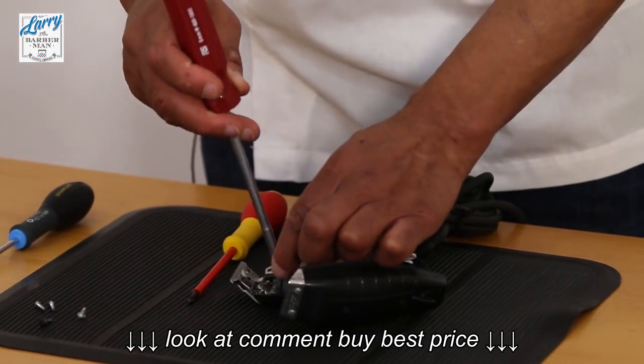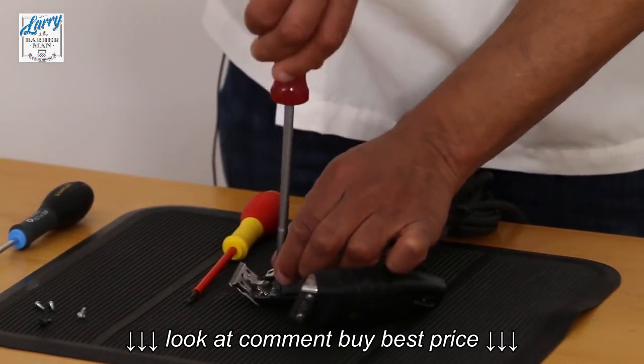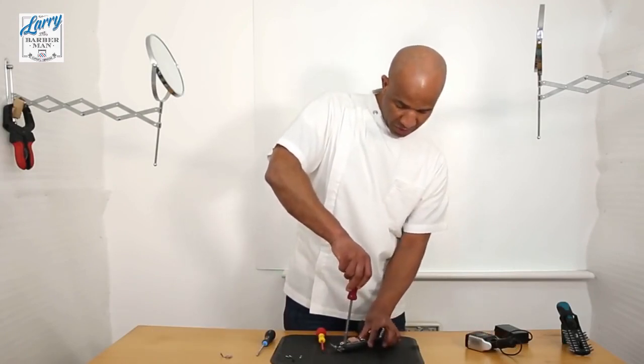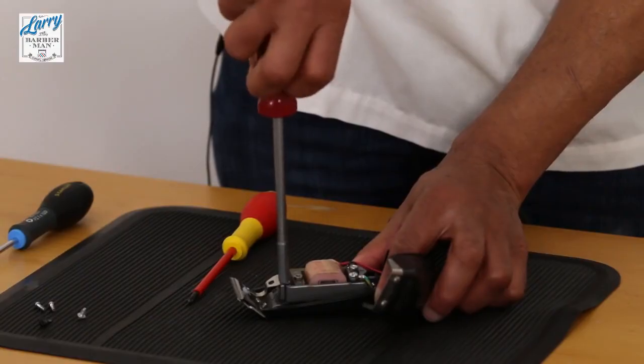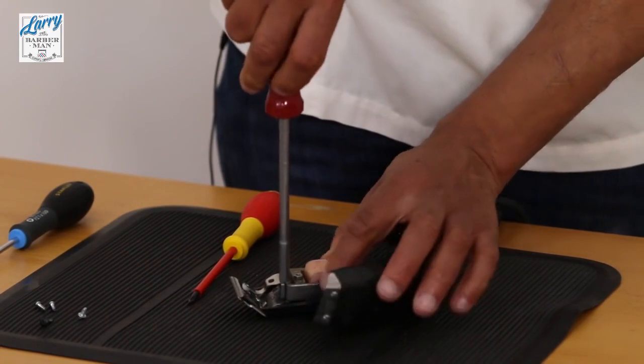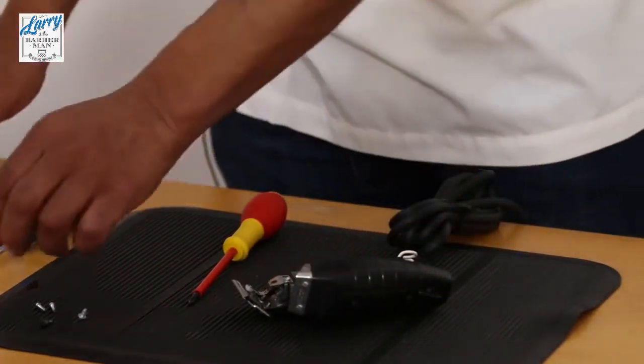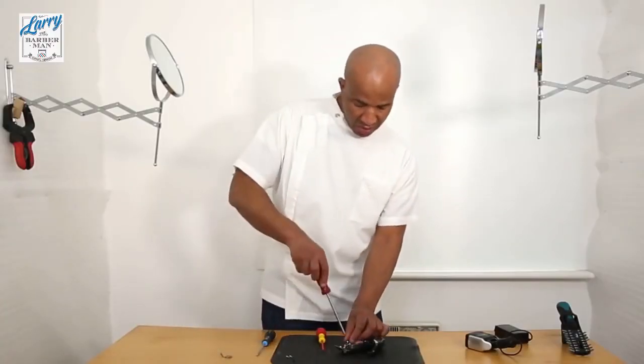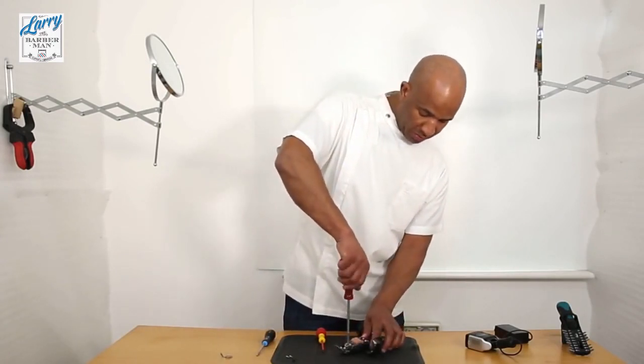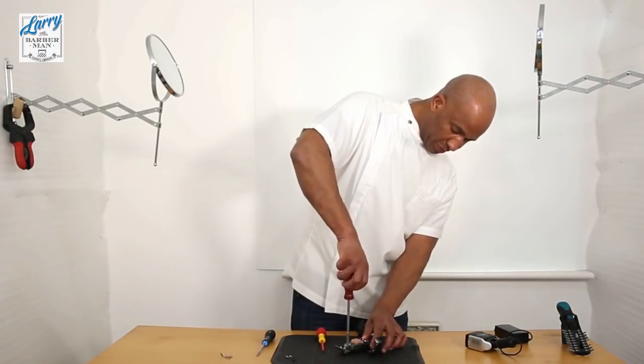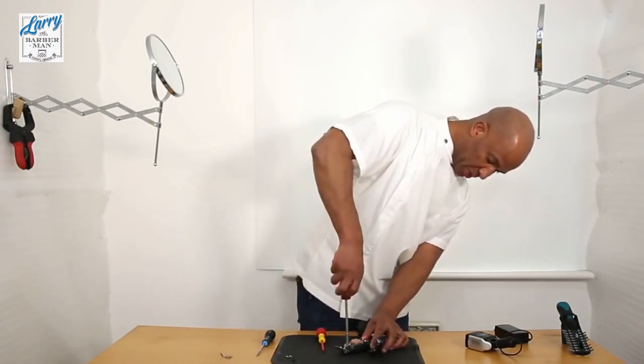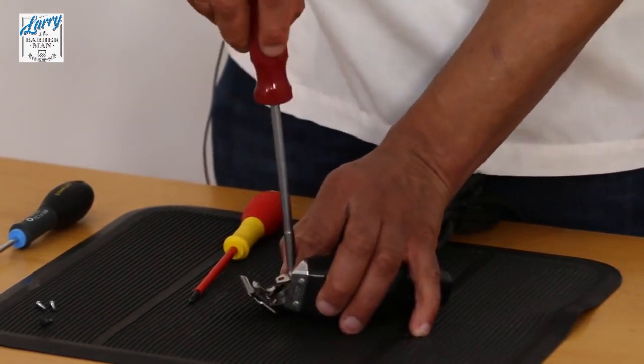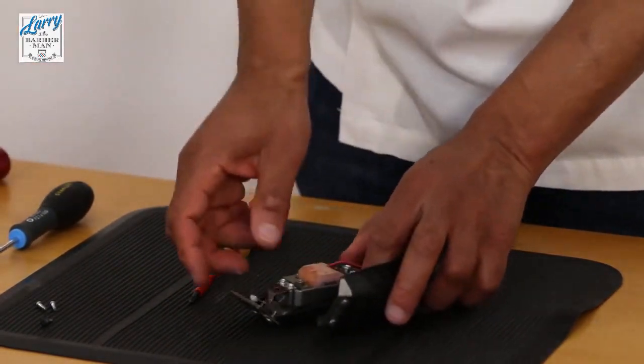So again come in with your nut spanner or your spanner and secure that back to the armature. Hopefully you can see all of that. Again nice and gentle because another thing you do not want to do is thread it. And just give that arm a bit of support when you are going in to do the tightening part.